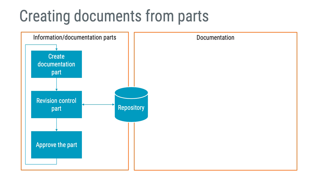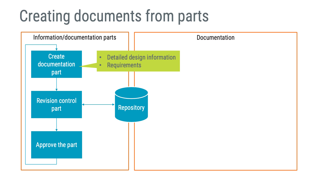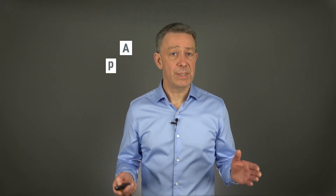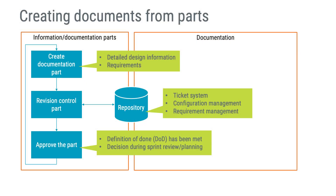The documentation parts can be stored as detailed design information in a ticket or as individual requirements in a requirement management system. The repository used to revision control the parts can be a ticket system, configuration management system, or requirement management system. The last step is approving the part — and this means the team approving the part, not necessarily using Part 11 compliant digital signatures. This approval can take place during a peer review of detailed design information in response to agreed criteria in the definition of done, or during a sprint review or planning.